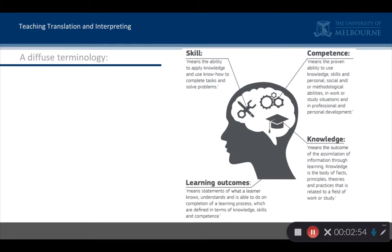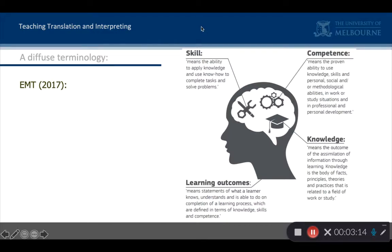Skills fit into the terminology of competence in many different ways. I'm just following one map here — from the European Masters of Translation 2017 — which is their overall map of what happens in translator training at master's level. You can see their definition of skill, which is exactly what I just said. The skill is knowing how — in French, savoir faire, the know-how. I know how to do it.